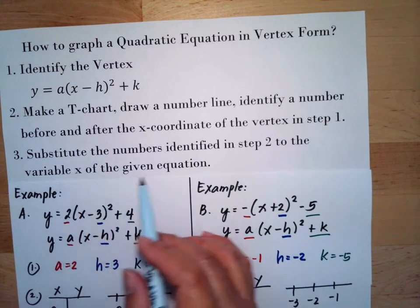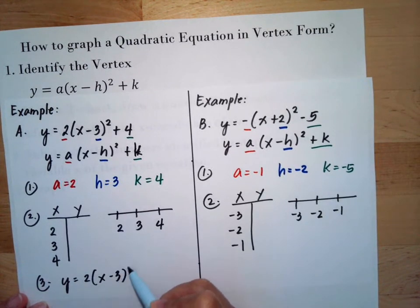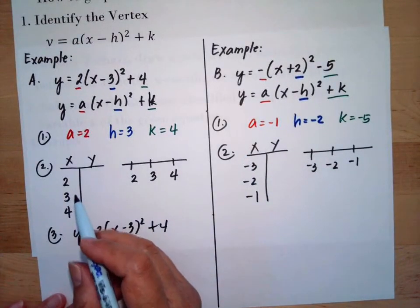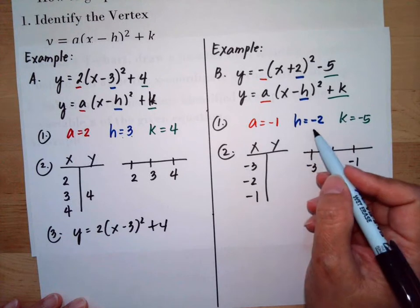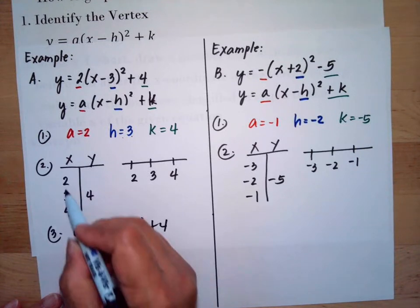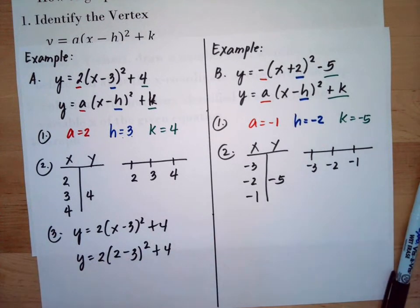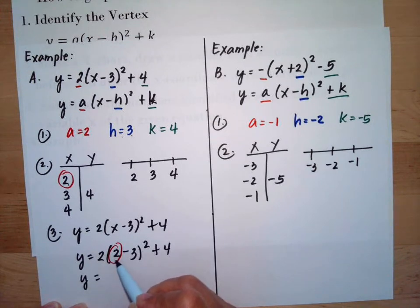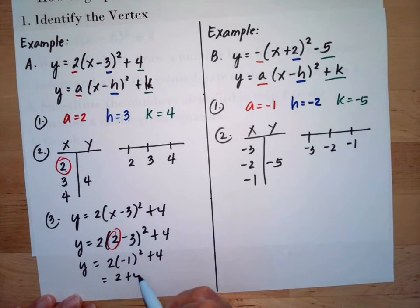Step 3: substitute the numbers identified in Step 2 into the variable x of the given equation. For Example 1, the equation is y = 2(x - 3)² + 4. Substituting x = 2: y = 2(2 - 3)² + 4. Since 2 - 3 = -1, we get (-1)² = 1, so y = 2(1) + 4 = 6.